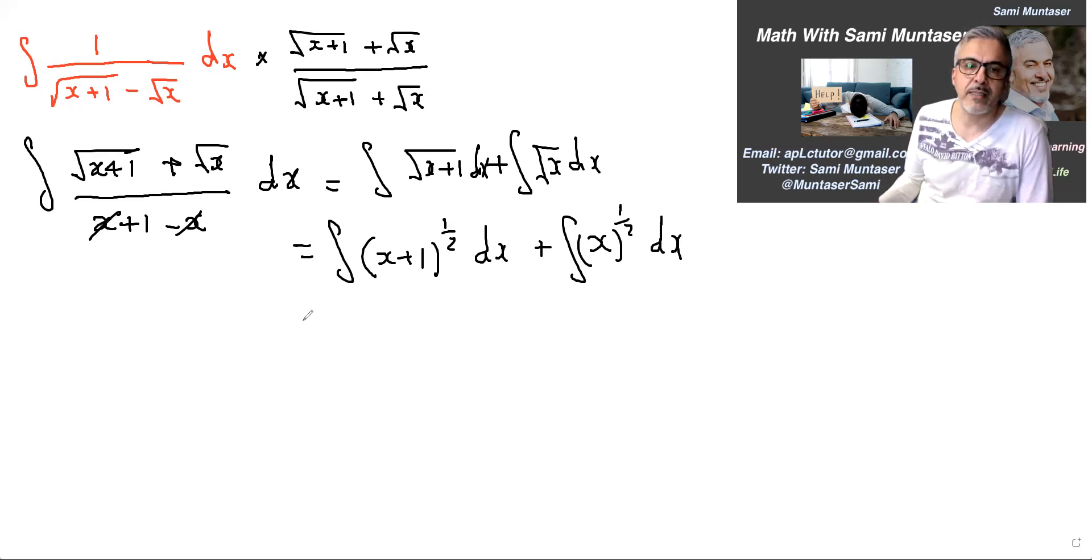We're integrating by adding 1 to the exponent, which gives 3/2. So this is x plus 1 to the power of 3/2, and then multiply by the reciprocal, or divide by 3/2, which is much faster and easier.